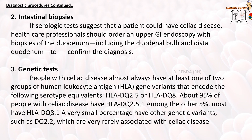For genetic testing: people with celiac disease almost always have at least one of two groups of human leukocyte antigen (HLA) gene variants encoding HLA-DQ2.5 or HLA-DQ8. About 95% of people with celiac disease have HLA-DQ2.5; among the remaining 5%, most have HLA-DQ8. A very small percentage have other genetic variants such as DQ2.2, which are very rarely associated with celiac disease.